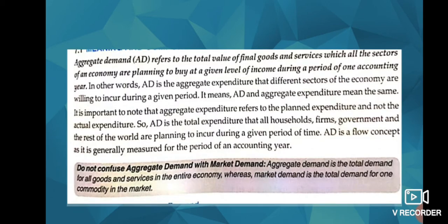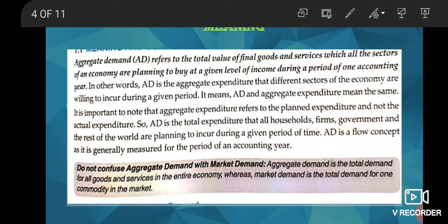First of all, we will talk about what is aggregate demand. Aggregate demand refers to the total value of final goods and services—not intermediary, not initial. If we have cotton goods, cotton balls is one business, then the process of yarn and thread is another process. We are not talking about intermediary goods, we are talking about final goods, the shares which have been made.